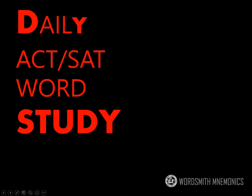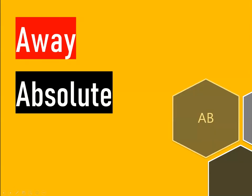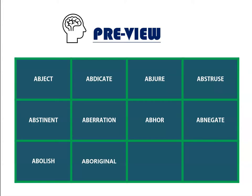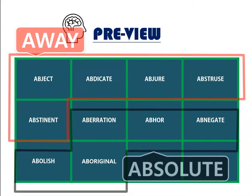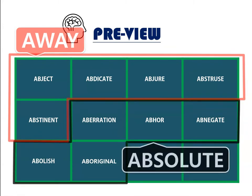Today's core mnemonic is Away and Absolute for prefix Ab. Turn your attention to the chart. The first five words are going to take mnemonic Away, and the next five take mnemonic Absolute.